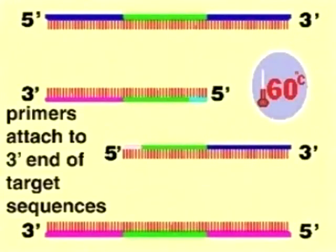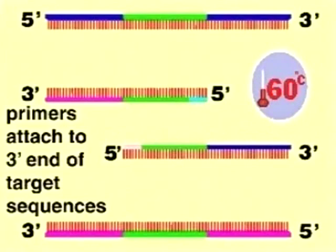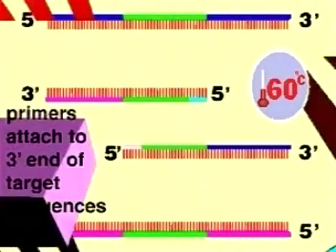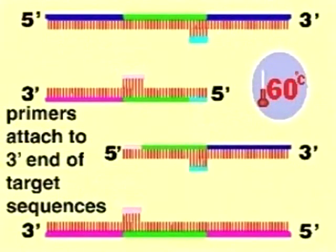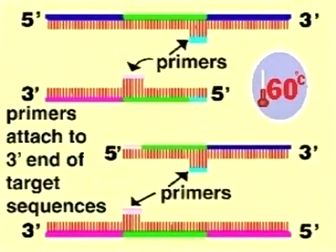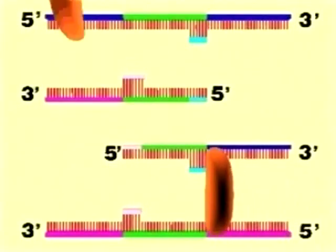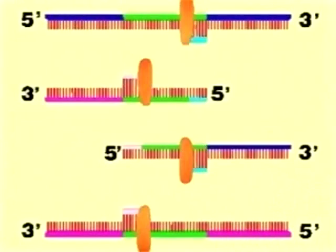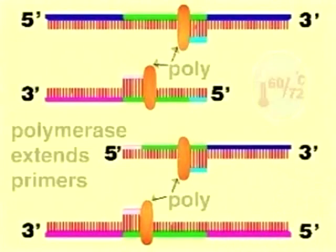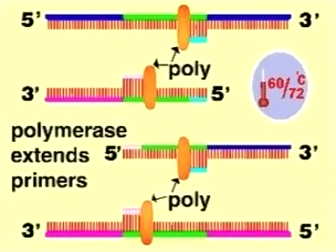PCR cycles are continued to around 30 cycles so that we finally isolate the pure DNA. The number of target sequences continues to grow exponentially at the end of each cycle. Taq polymerase has a special property in that it is thermostable and can withstand high temperatures without denaturing.